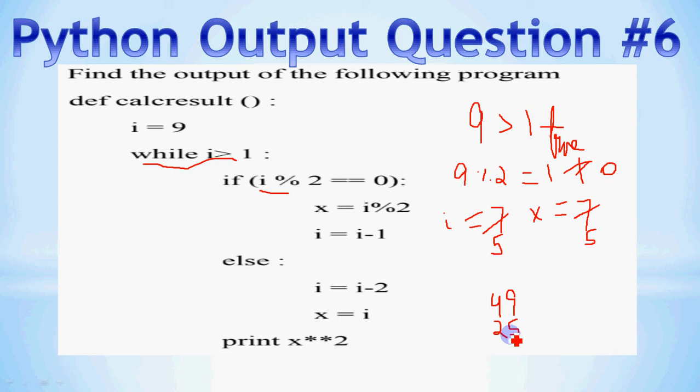Uske baad aapke paas kya ho jayega, 9 ho gaya, 7 ho gaya, 5 ho gaya. Now we get to go up again, and check 5 greater than 1 hai yaha nahi, hai. 5 mod 2 0 nahi hai, yaha par aayega. So i is equal to i minus 2, so phir se decrease ho jayega. It will become 3, so ye bhi 3 ho gaya. Along with that aapka x bhi 3 ho gaya, aur woh phir print karayega, x raise to the power 2. That means 3 raise to the power 2, so 3 into 3 will be 9. So I get 9 printed on the screen.